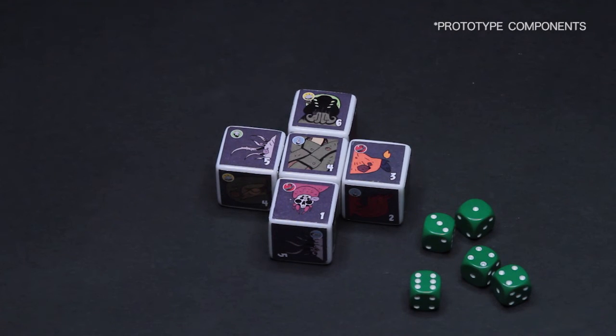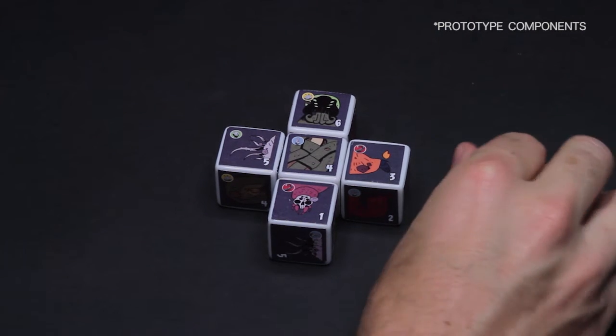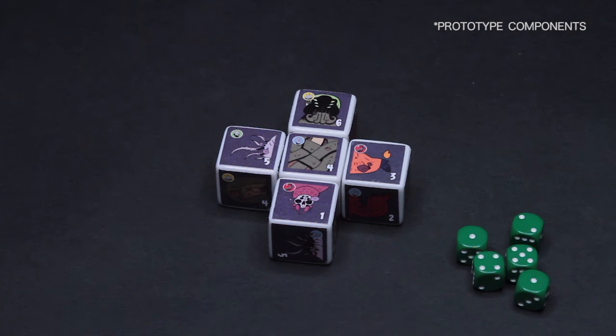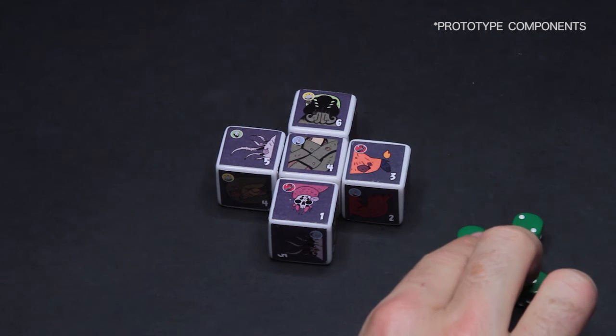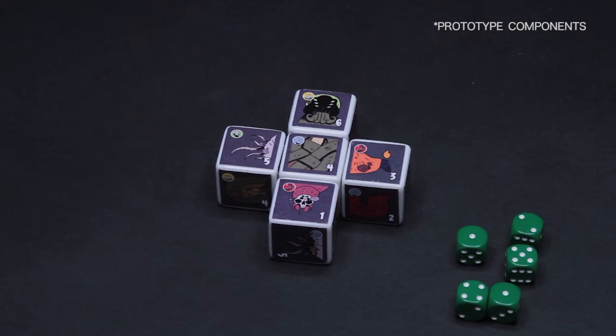The way you do that is by first taking the green summoning stones and rolling them. A unique thing about Chaos of Cthulhu is that you can add the numbers of dice together to make new numbers, and you can also put them together to subtract to get numbers.